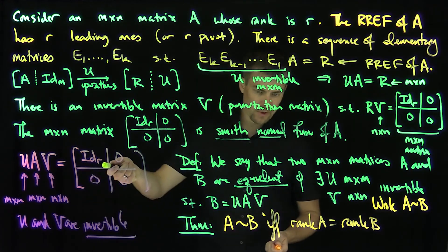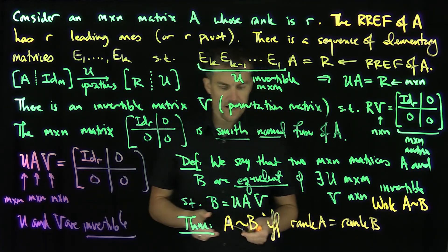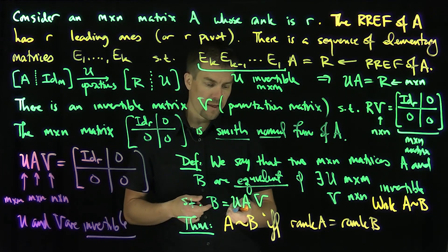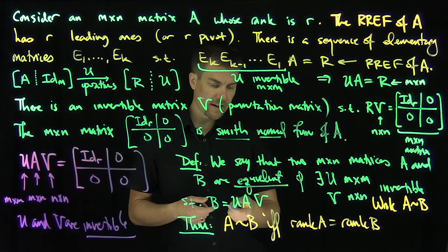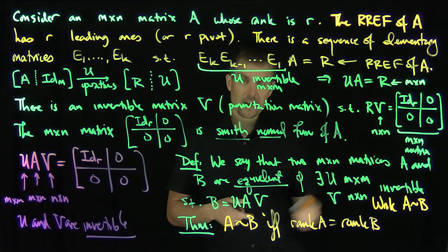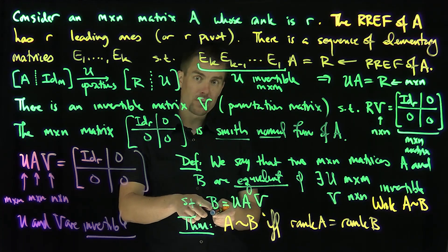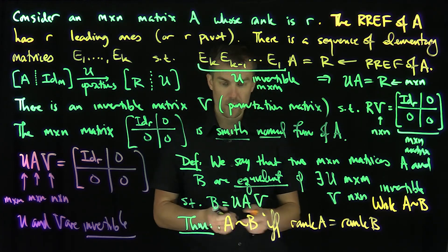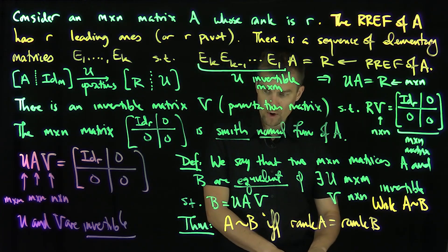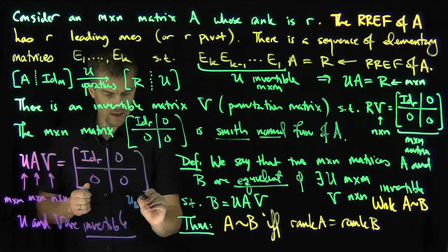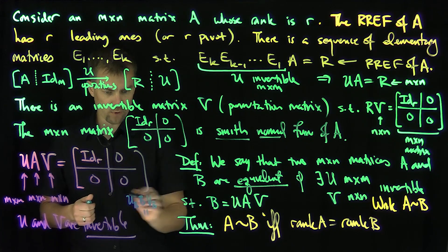The proof comes from the Smith Normal Form. If A has rank R, we can find invertible matrices U_A and V_A such that U_A times A times V_A reduces to the Smith Normal Form. Analogously, if B is also rank R, we can find matrices U_B and V_B such that U_B times B times V_B equals the same Smith Normal Form.